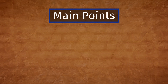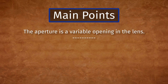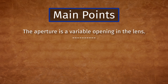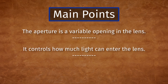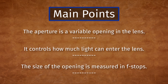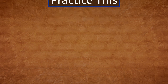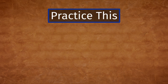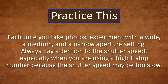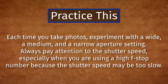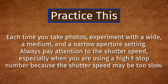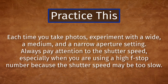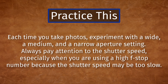The main points in this lesson are: the aperture is a variable opening in the lens that controls how much light can enter; the size of the opening is measured in f-stops. To improve your photography, each time you take photos experiment with a wide, medium, and narrow aperture setting. Always pay attention to the shutter speed — especially when using a high f-stop number, because the shutter speed may be too slow.